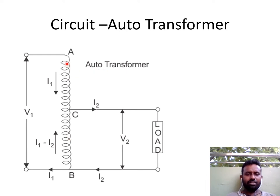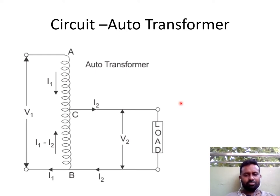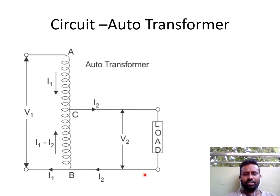This is the circuit of an auto-transformer wherein you have only one winding used as the total winding. Part of this winding is used as the primary winding to receive the input voltage V1, and a part of this winding is utilized as the secondary winding giving voltage V2. Here V1 is greater than V2, so it is a step-down transformer. The current I1 flows due to V1, and I2 is the current in the secondary. Therefore, the current flowing through the series section will be I2 minus I1 according to Kirchhoff's current law, since the total incoming current must equal the total outgoing current.